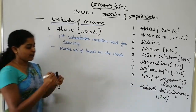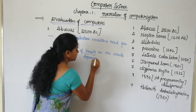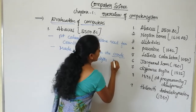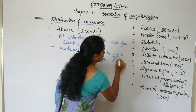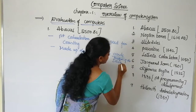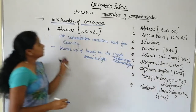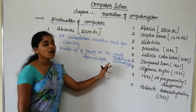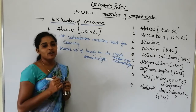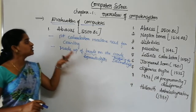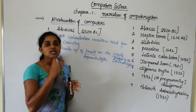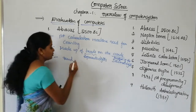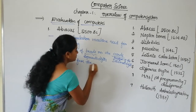These beads represent the digits, and these cords represent the position of the decimal digits. The beads and cords of the Abacus are used for simple arithmetic calculations.